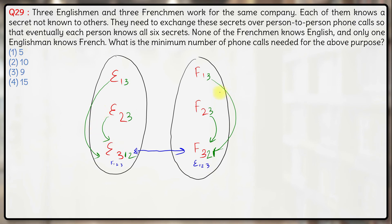So far 2 plus 2 plus 1, 5 calls have been made and in the final step, let's make them talk to E2 and E1 once more. Since this guy knows the secret of all 6, he can convey it to E2 in one phone call and E1 in another phone call and same is the case for F3 and F2 and F1.